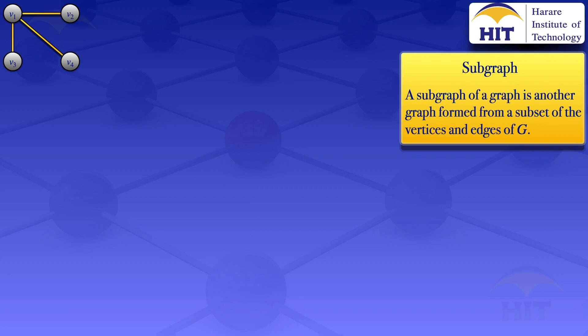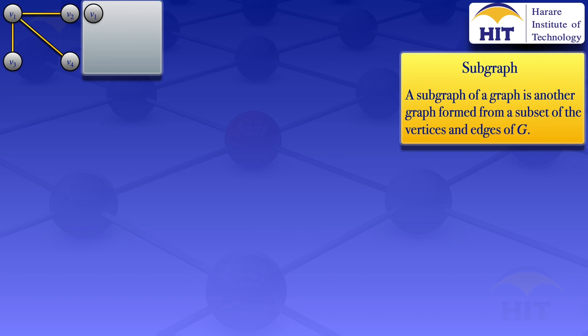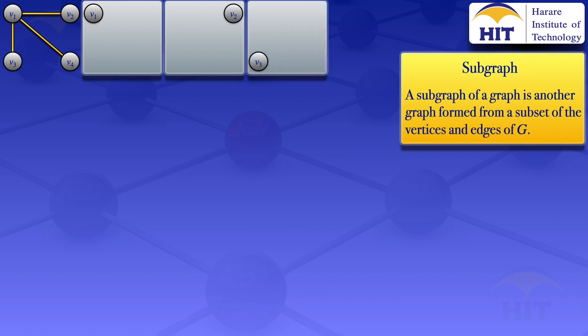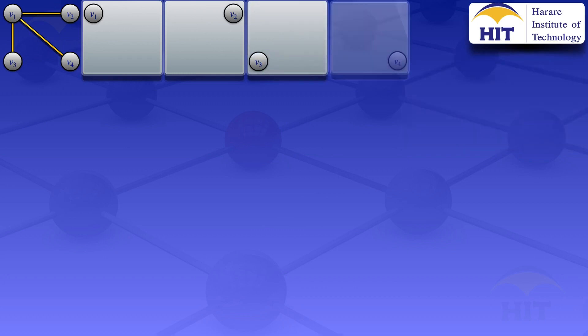I will draw my graphs in squares. So for the first one, that's the graph there — it is just one vertex v1. For the second one, it is one vertex v2. The third one has one vertex v3. And the next one has one vertex v4. So these are subgraphs where we have only one vertex.